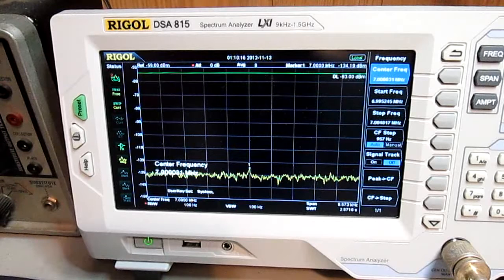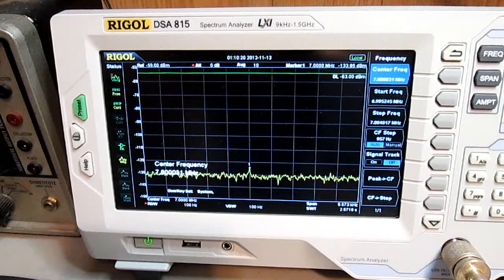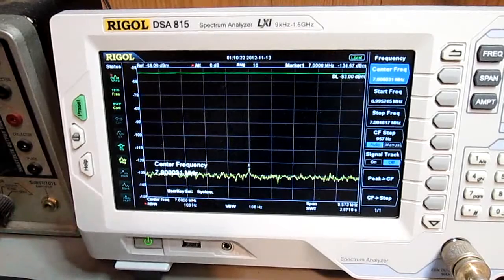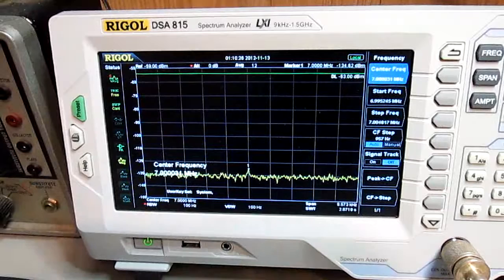And the marker frequency up on top says marker 1, 7.000, at a minus 133 point, oops, it changed to minus 134.6 dBm, but we could try the frequency counter.